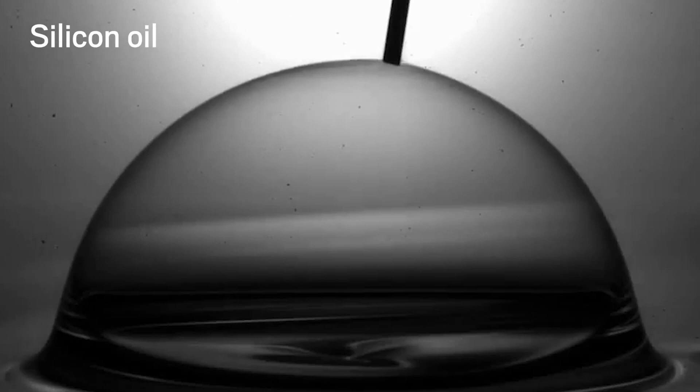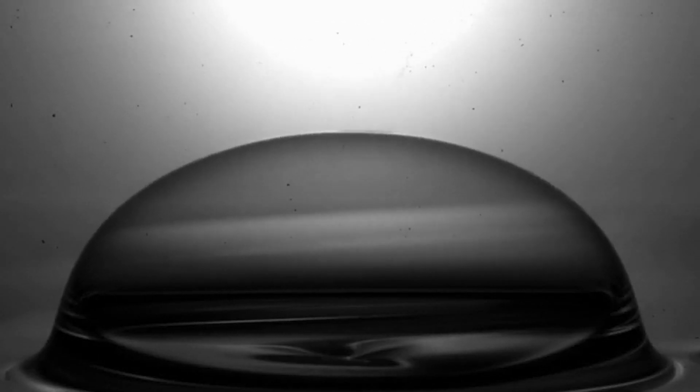This silicon oil bubble is about to be popped. As air escapes, the bubble collapses and wrinkles form around its edges. This process is driven by gravity acting on the thin film, or so scientists thought.